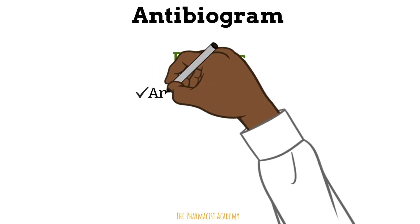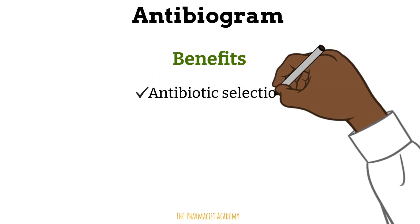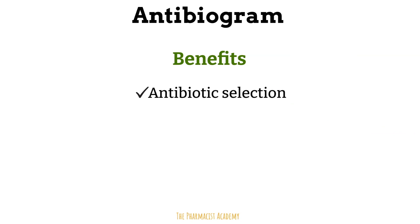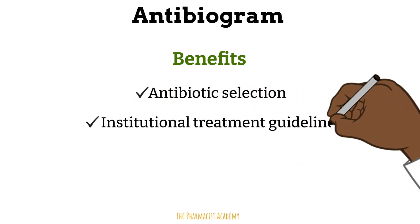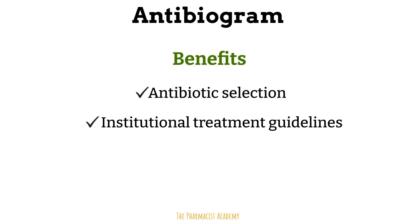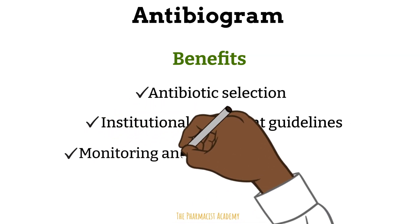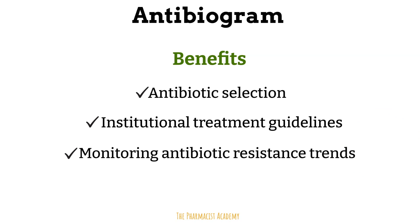Antibiograms are essential for the following. First, antibiotic selection — whether for empiric therapy or when we know the bacteria causing the infection, the antibiogram helps us pick one antibiotic over another. We may have three drugs in the hospital formulary with activity against E. coli, but the antibiogram provides local susceptibility data to guide that decision. Institutional treatment guidelines are developed using antibiograms; for example, if fluoroquinolone susceptibility in E. coli decreases below 90%, guidelines may discourage ciprofloxacin for UTIs in favor of nitrofurantoin or fosfomycin. Lastly, antibiograms are important for monitoring antibiotic resistance and trends.